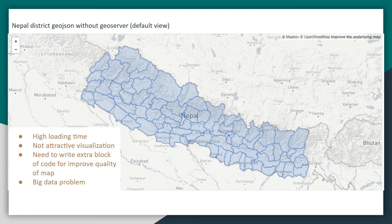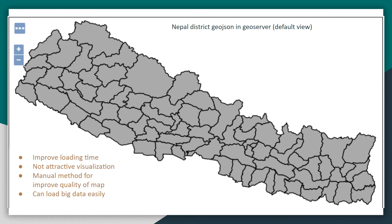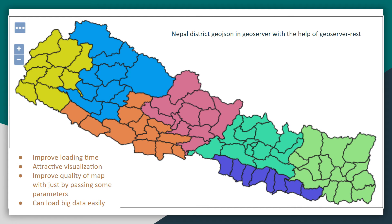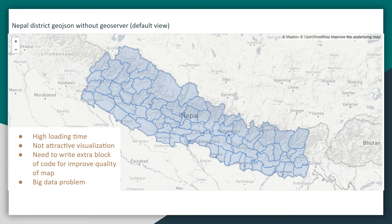Here is an example using a Nepal GeoJSON file loaded directly into Mapbox. The same Nepal district GeoJSON loaded in GeoServer shows the default view. When loaded through the GeoServerREST library, the map is not very attractive and requires extra code to improve quality. It also takes longer to load because the browser struggles to handle large volumes of JSON data in a short time, which is the big data problem with loading GeoJSON directly into Mapbox, OpenLayers, or Leaflet.